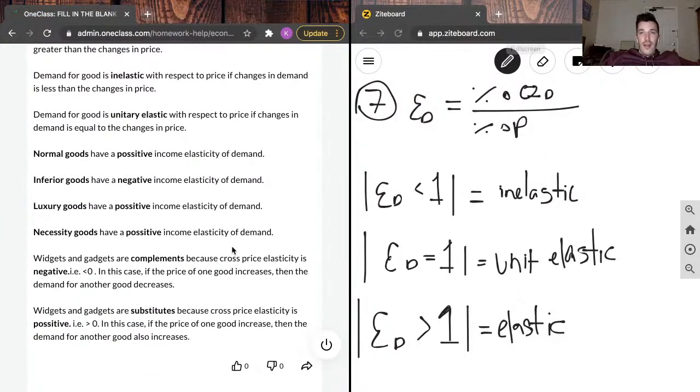So, they'll have a negative income elasticity of demand. Luxury goods and necessities will both have a positive income elasticity of demand, as I alluded to. But necessities will probably be inelastic, and luxuries will probably be elastic.